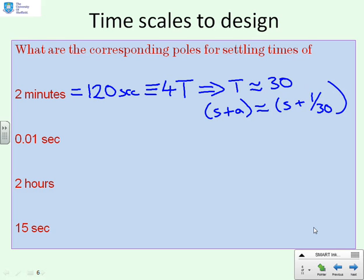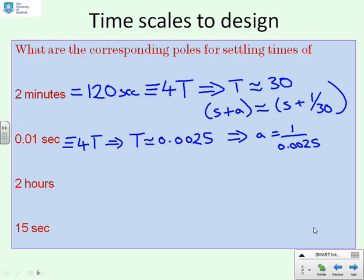What about 0.01 seconds? Well, this again has to be equivalent to 4T. And that implies that capital T is approximately 0.0025. And that implies that a has got to be 1 over 0.0025. And I think I'm doing this off the top of my head. That must be about 400. You can correct it later if I've got that wrong. So a very different pole position.